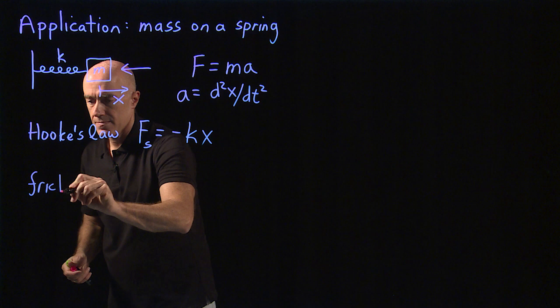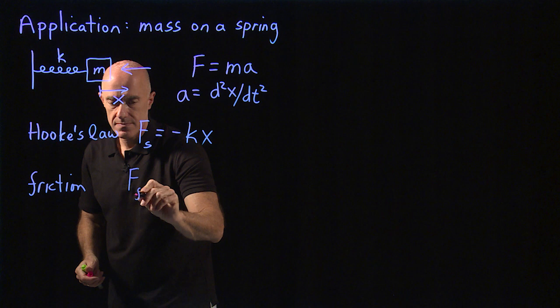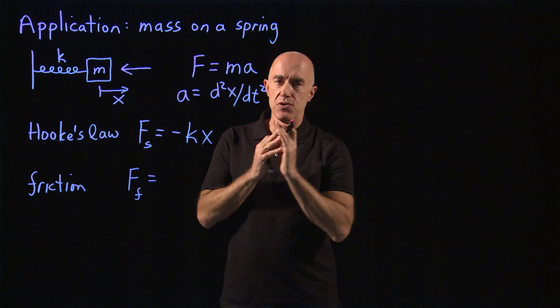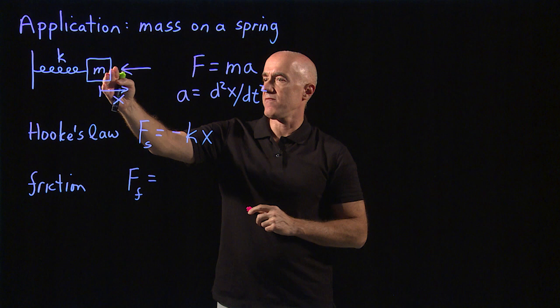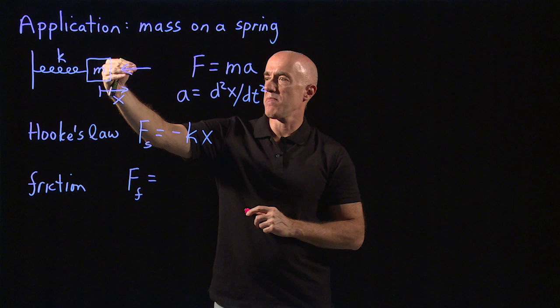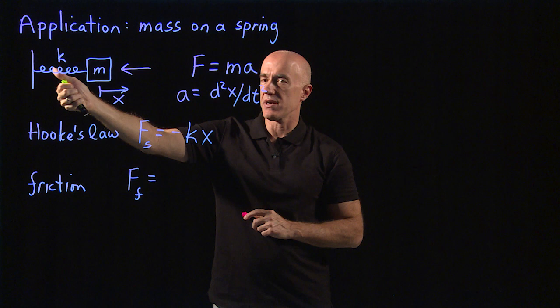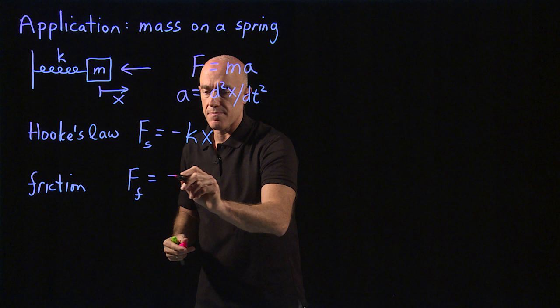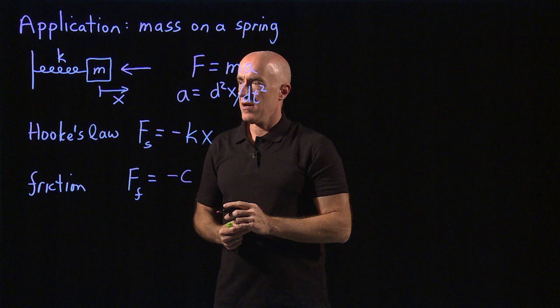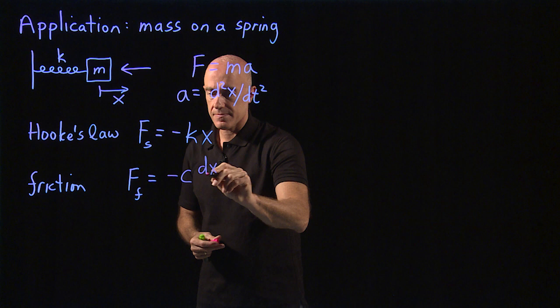On top of that, you need to model friction. So we have the frictional force. We're gonna model friction as opposing the motion of the mass. So if the mass is moving with some velocity in the positive x direction, the friction is gonna be modeled as proportional to the velocity, but in the opposite direction, opposing the motion. So we're gonna model the friction by minus c times the velocity, which will be dx dt.